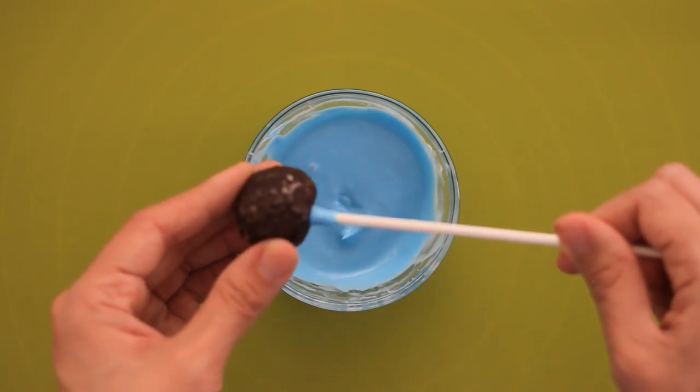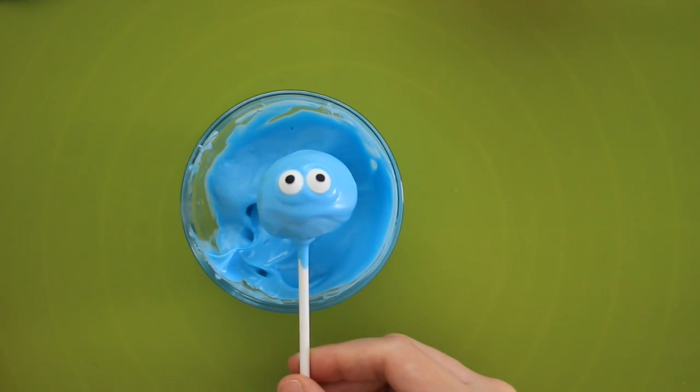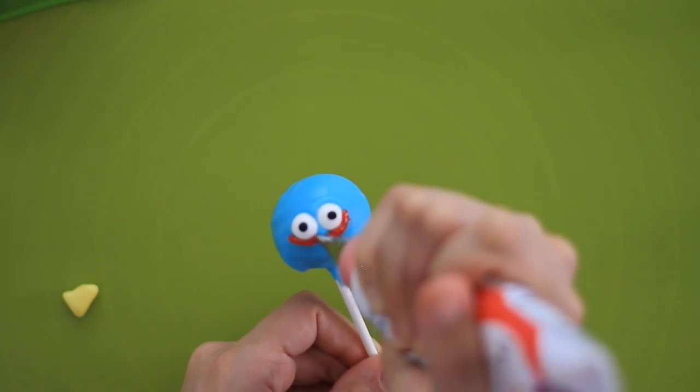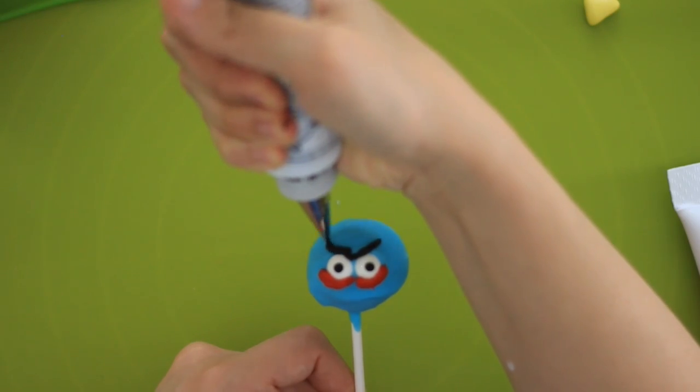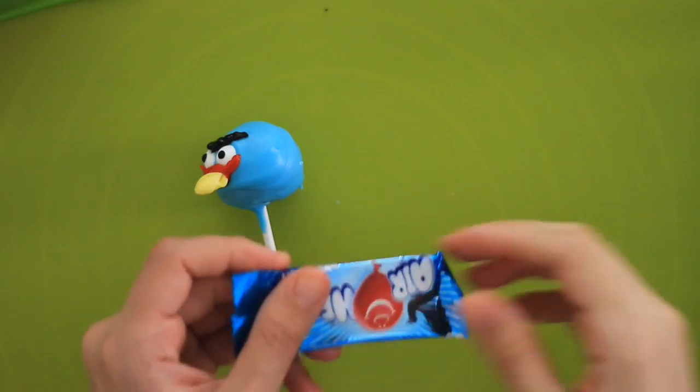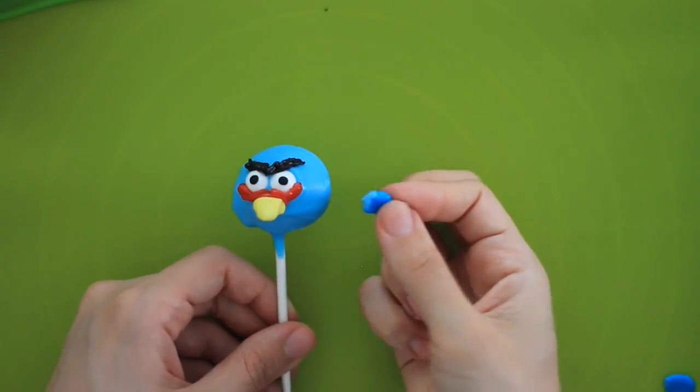Repeat the same steps with the candy melts. Add the candy eyes. Use the red decorating icing and a number two tip. Add the angry brows. Add the beak. Use the blue airhead to finish off the bird.